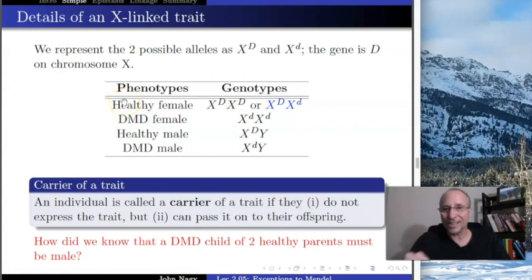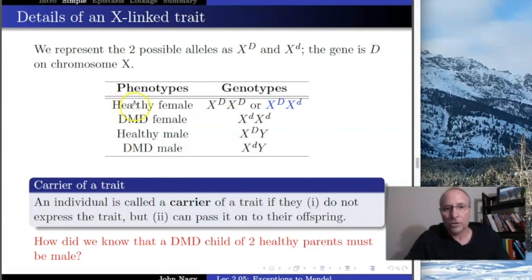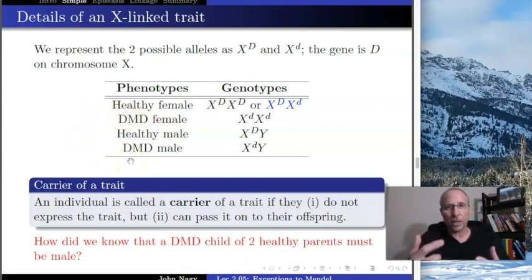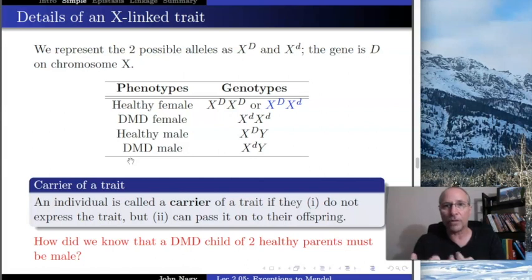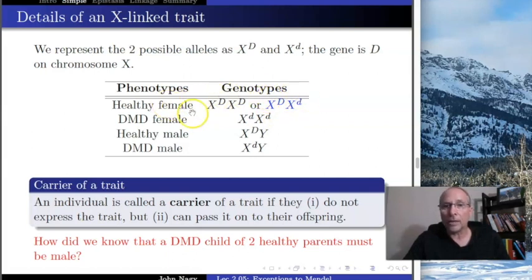Because it's sex-linked, we have to keep track of the sex of the individual. We could have a healthy female or a healthy male, or a DMD female or a DMD male. For females, with two X chromosomes, she could be X^D X^D — healthy; X^D X^d — also healthy; or X^d X^d — which would give her DMD.